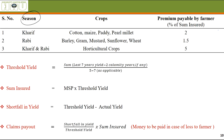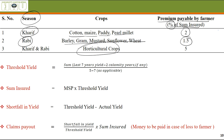In Haryana, crops covered in the Kharif season are cotton, maize, paddy, and pearl millet. For Kharif season crops, the farmer needs to pay 2% of sum insured as premium. In the Rabi season, five crops are insured and the premium is 1.5% of sum insured. For horticultural and perennial multi-year crops, 5% of sum insured needs to be paid by the farmer.